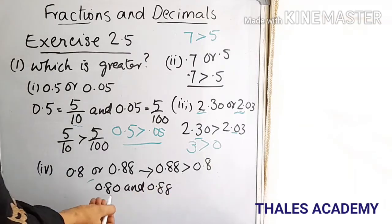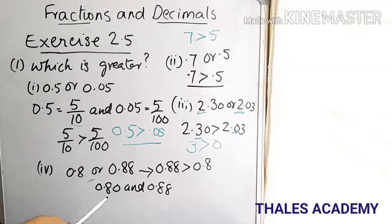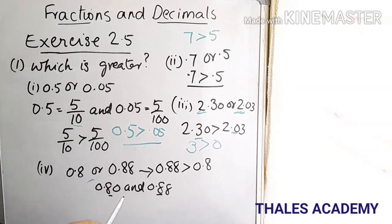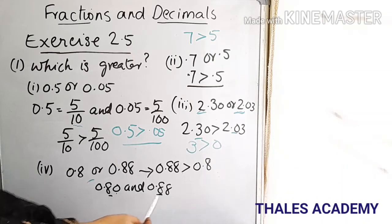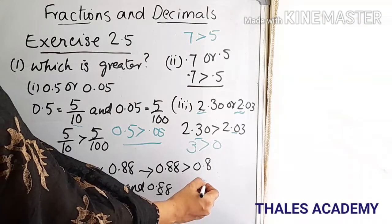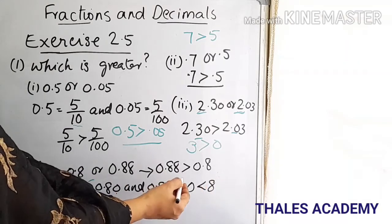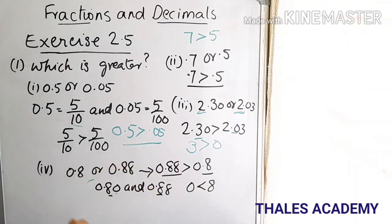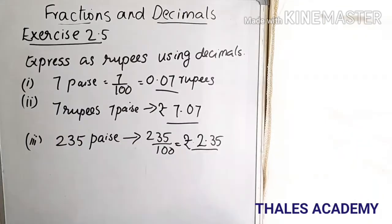Next, 0.8 or 0.88 — which is greater? We compare the digits right of the decimal point. The tenths digit is the same in both. Then we take the hundredths digit: 0 and 8. Since 0 is less than 8, 0.88 is greater than 0.8.